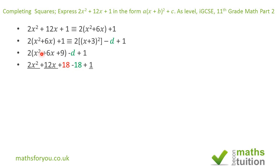Now if we track back, if we go back to this stage and go back from there, we end up with 2(x² + 6x + 9), leaving our minus 18 there, minus 18 plus 1.